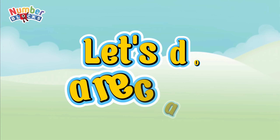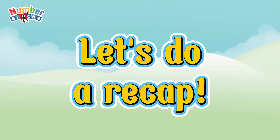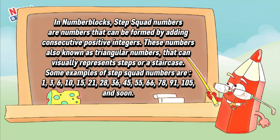Let's do a recap. In number blocks, step squad numbers are numbers that can be formed by adding consecutive positive integers. These numbers, also known as triangular numbers, can visually represent steps or a staircase.